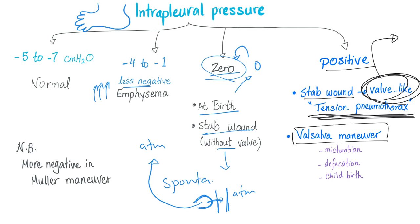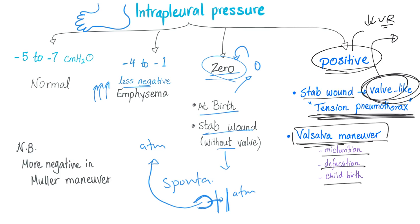Can it be positive? Yes — stab wound with a valve called tension pneumothorax, causing mediastinal shift towards the normal side. Or with Valsalva maneuver — you close the glottis and force your chest inwards. The two surfaces come closer to each other, creating positive intrapleural pressure, forcing stuff outside your body. Valsalva maneuver causes positive intrapleural pressure, therefore decreasing venous return to the heart. That's why elderly patients doing Valsalva for a long time while defecating can decrease their venous return and pass out in the bathroom.